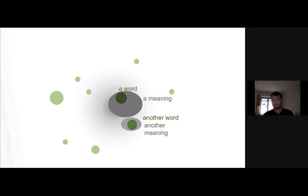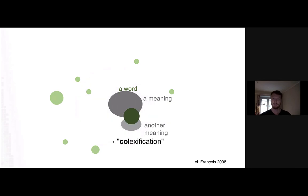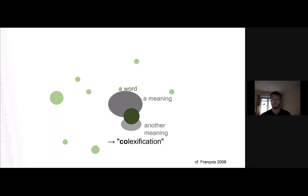We might also have different meanings, and in some cases there is one word for each meaning. But in other cases we have something called colexification, which is just one word referring to two or more meanings. You might ask: how do we know there is more than one meaning? One way people have done this is by comparing lots of languages and figuring out that yes, it is indeed possible to slice this meaning into multiple meanings, because some languages do it whereas some don't.